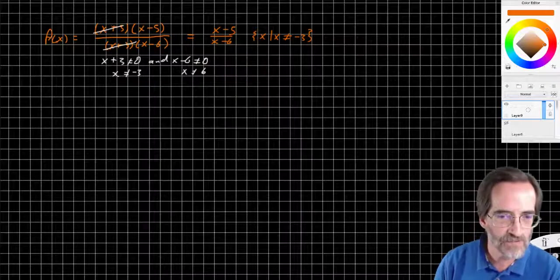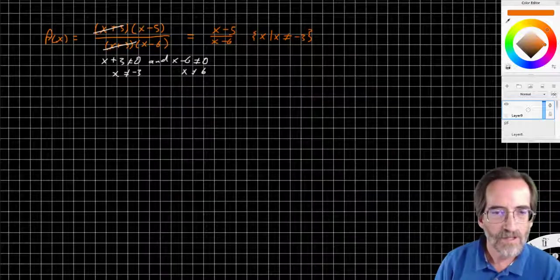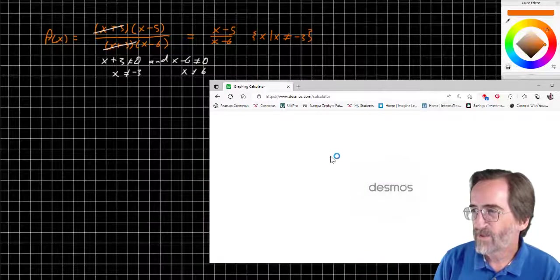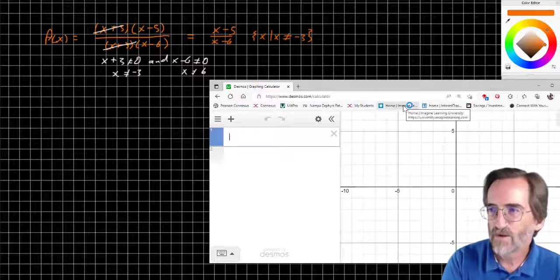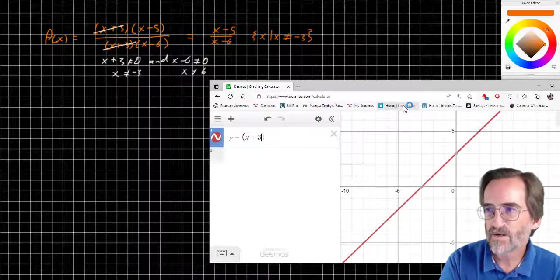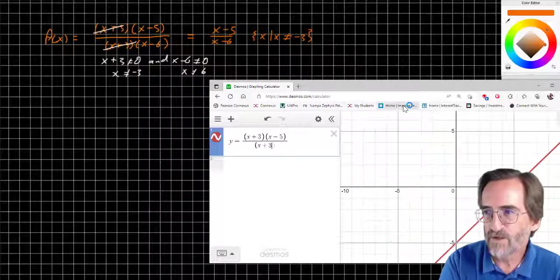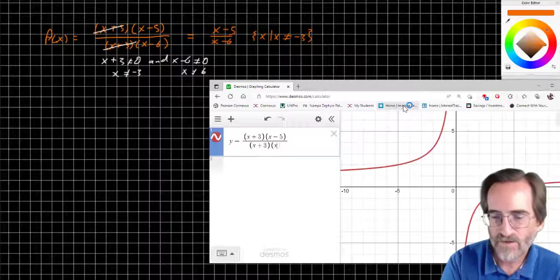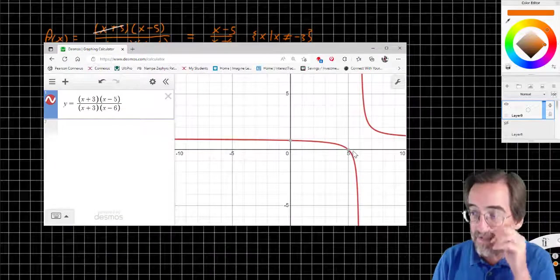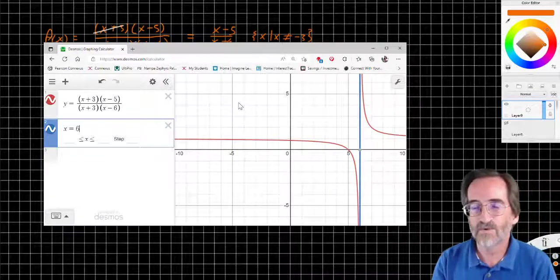Let me demonstrate this in Desmos real quick here. I think I've done this before, but it bears repeating. So, let's input the original function. y equals (x+3)(x-5) all over (x+3)(x-6). And you'll notice right away, the discontinuities that we've talked about, there is an asymptotic discontinuity at x equals 6. In fact, if I graph x equals 6, you'll see it right there.